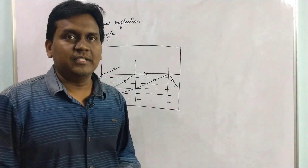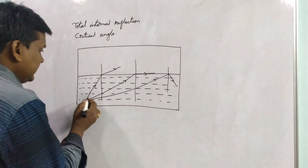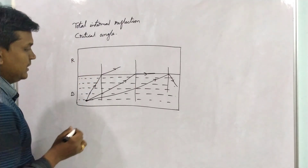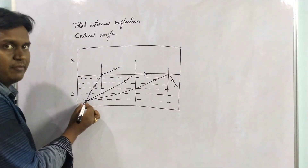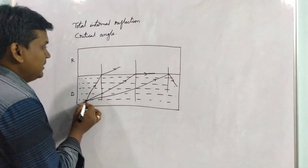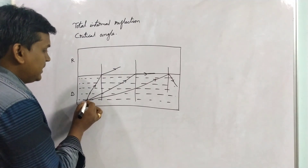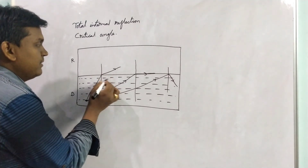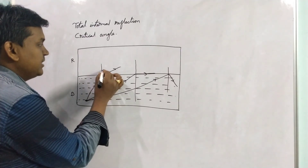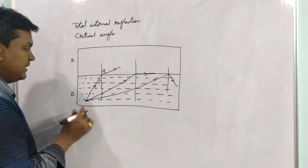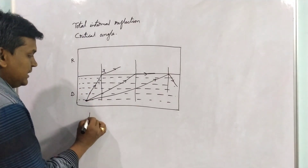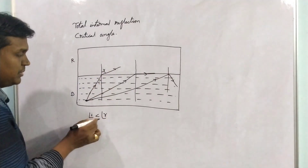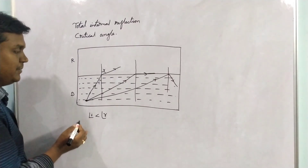Now let us see total internal reflection and critical angle. There are two mediums — this is the denser medium and this is the rarer medium, and here is a source of light travelling from the denser medium. When a light ray travels from optically denser to rarer, it bends away from the normal. So the angle of refraction is greater than the angle of incidence, meaning angle R is greater than angle I.